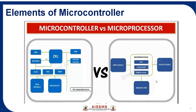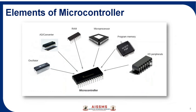Microprocessors are generally used in computers and laptops only, while microcontrollers are used in every embedded application. Again, the elements of a microcontroller include: oscillator, A-to-D converter, RAM, processor, program memory, and input-output peripherals — everything embedded into a single microcontroller chip.